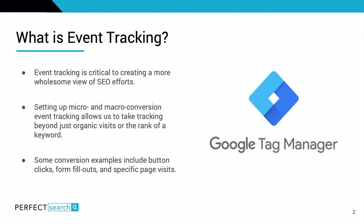Before we jump into specifics, it is important to understand what event tracking is. It is critical to creating a more wholesome view of your SEO efforts to determine how well you're performing. By setting up micro or macro conversion event tracking, you are able to track beyond just organic visits, organic sessions, or a specific rank position of a keyword. Some conversion examples include the number of button clicks a call to action receives, the number of form fill-out submissions an application gets, or the amount of page visits on one specific page. These are just examples and there are a lot more options for building out event tracking within Google Tag Manager.